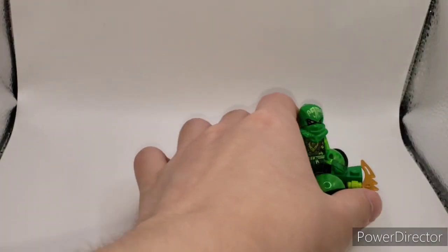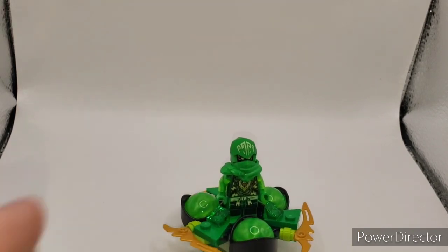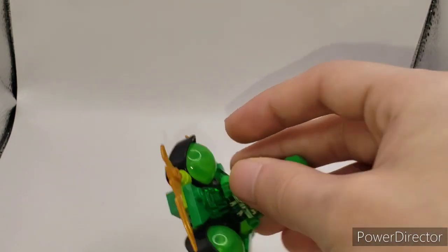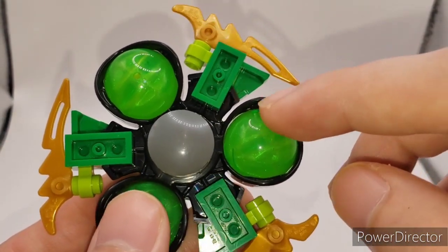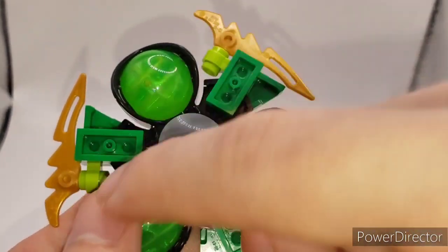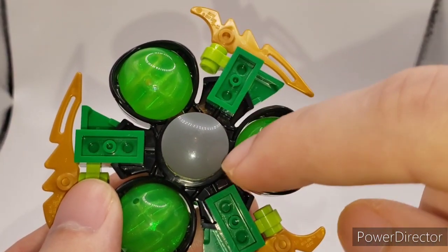Alright, so let's start off with Lloyd's Spinner. It's a very simple build, but you do get this new piece for the whole base. Like, this whole piece, the whole base that holds all of these energy cores is one piece.